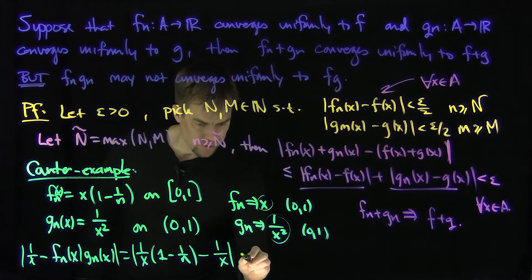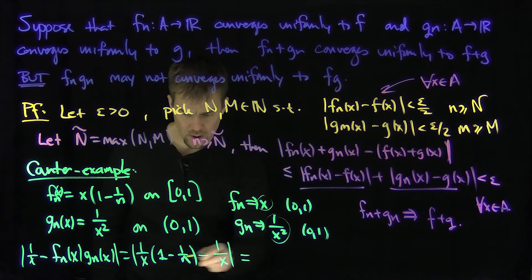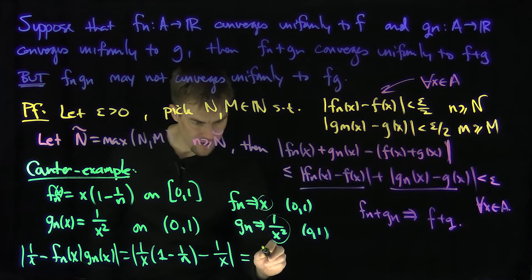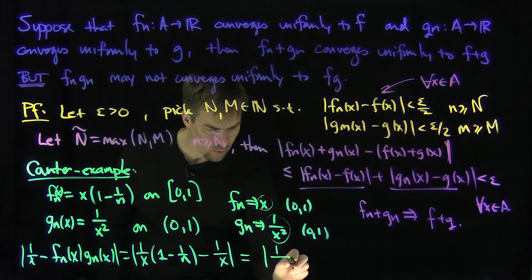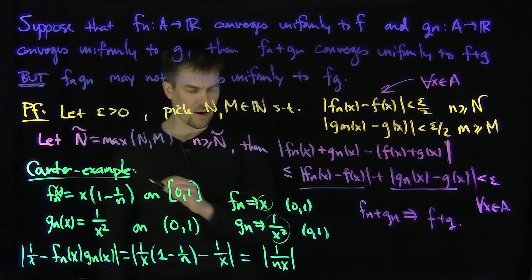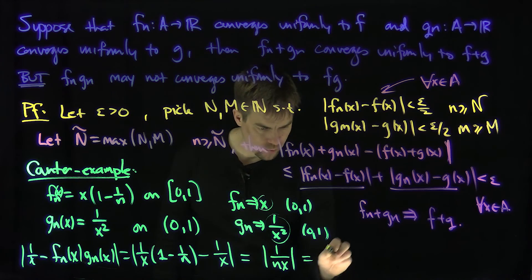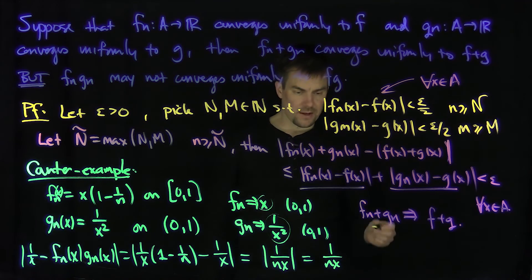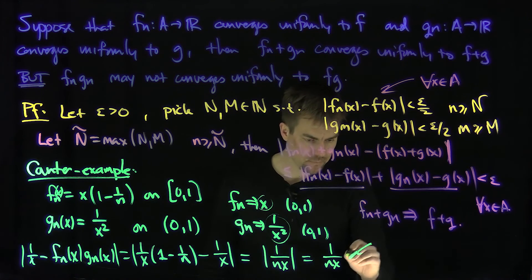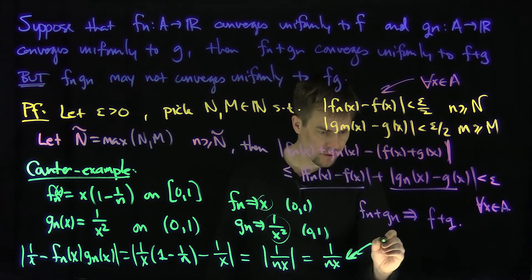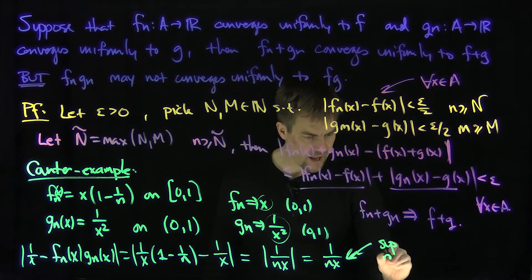This is just going to be 1 over, these are going to cancel, and I have an absolute value of just 1 over Nx. So this equals 1 over Nx, and the supremum of this difference.